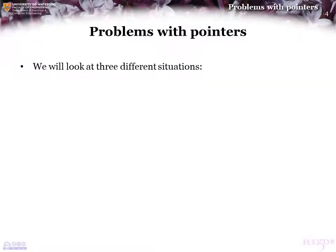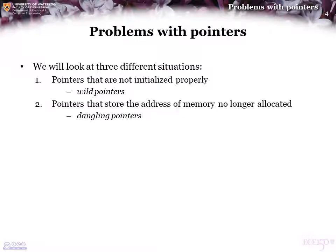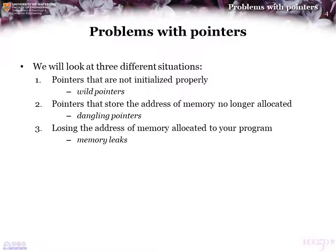We're going to look at three common situations that cause issues with pointers. First, pointers may not be properly initialized — these are called wild pointers. Second, pointers that store addresses of memory that are no longer allocated — these are called dangling pointers. Third, losing the address of memory that has been allocated to your program — this is called a memory leak.